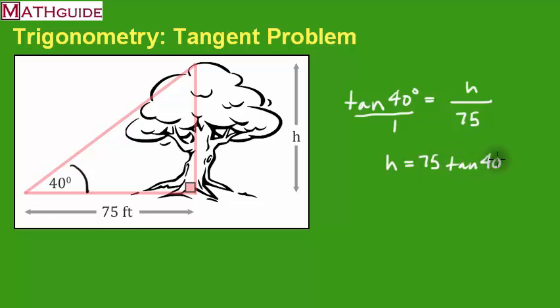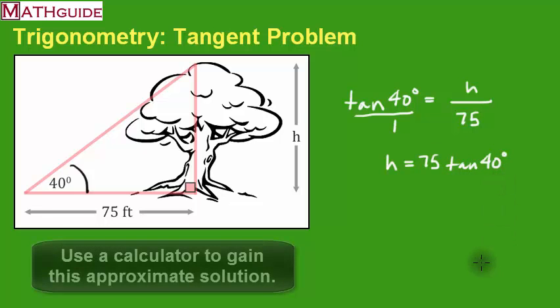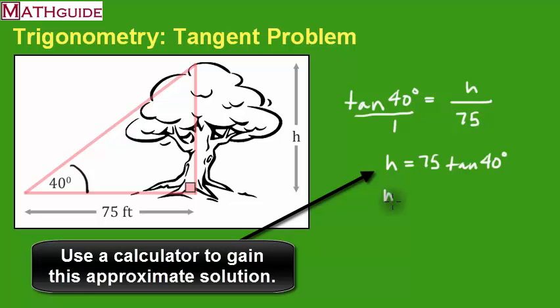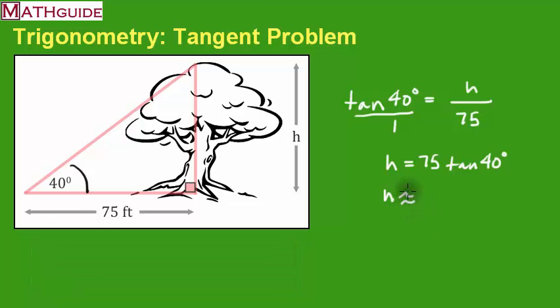Not much I could do with that, except, of course, plug that into a calculator, and that's what I'm going to do. So what is that? Actually, I should put approximately equal to, because I have to chop off the decimals somewhere. If I round this to the nearest tenth, it turns out to be 62.9.